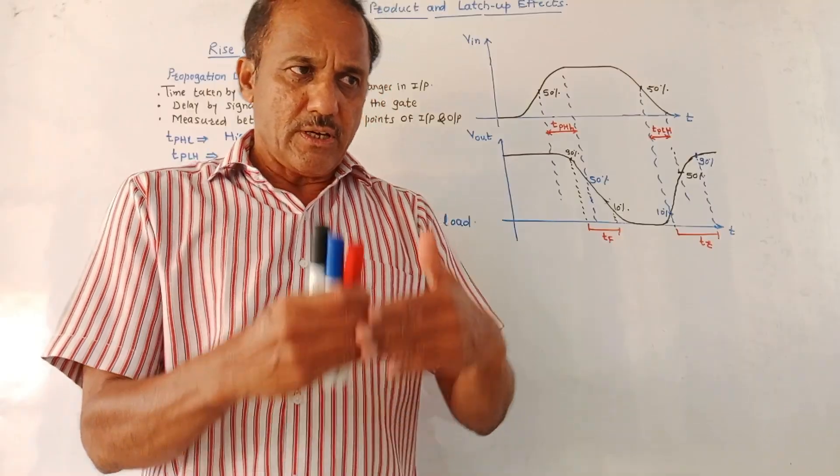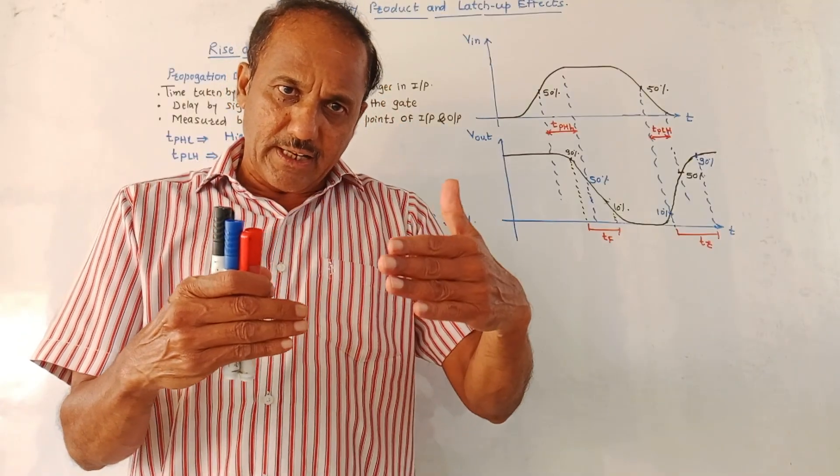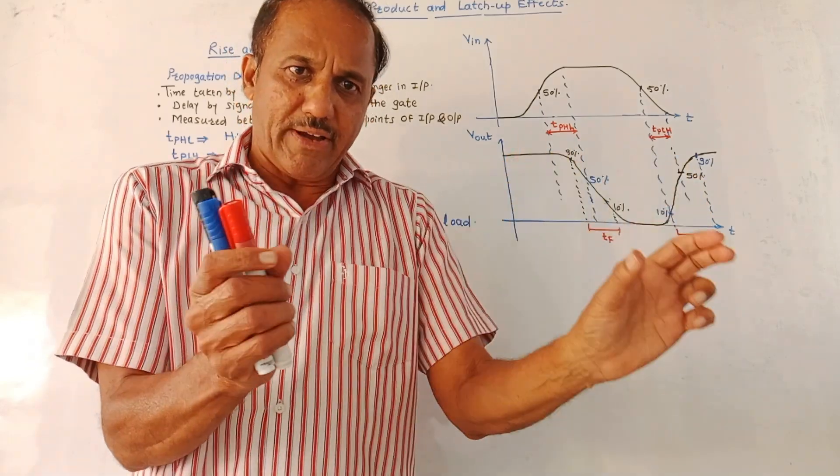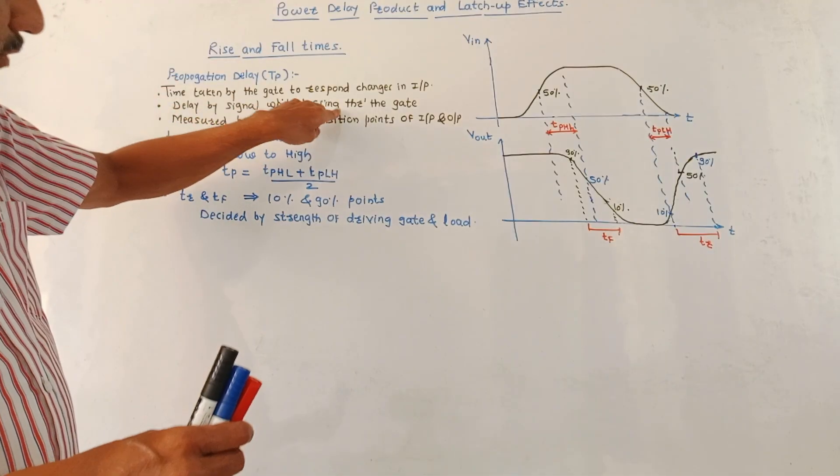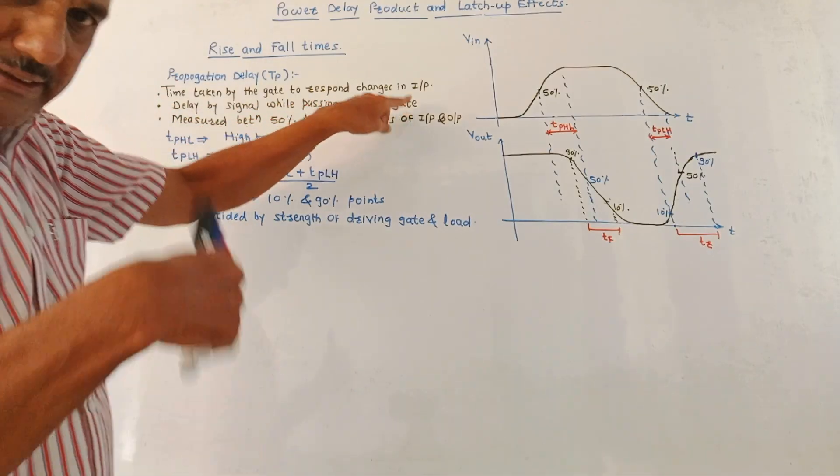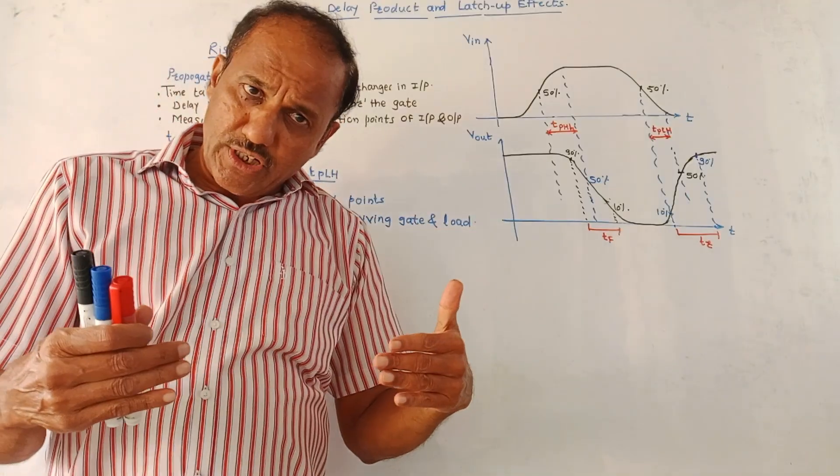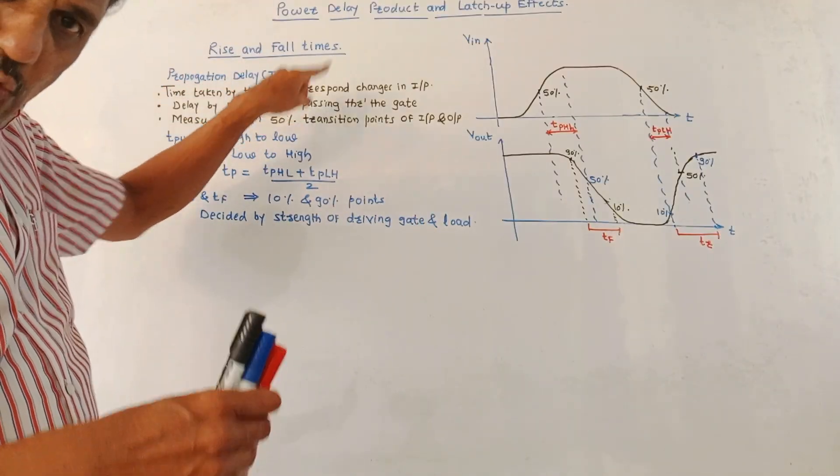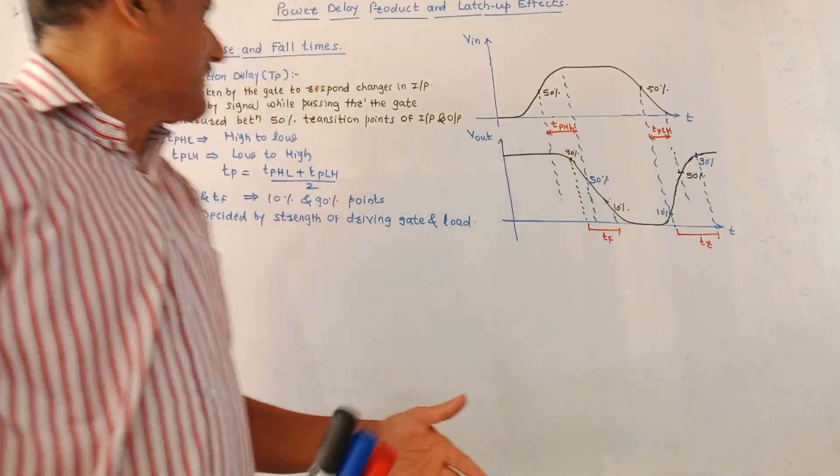In very simplified language, delay is the time taken by the signal when transmitting, when passing through the particular device. It is the delay taken by the signal while passing through the gate, let us say transmission gate. Or in another language, it is defined as the time taken by the gate to give response to change in the input signal.